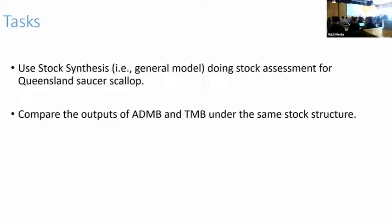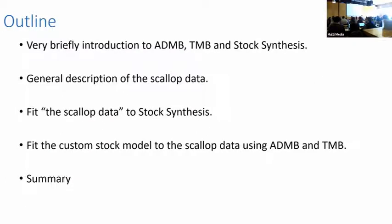This model is a spatial model, also trying to include some environmental factors — specifically sea surface temperature. We found that sea surface temperature has a negative impact on stock catch rate. The outline here is: I'll briefly introduce AD&B, TMB, and Stock Synthesis based on what I know. Then I'll describe the model, fit data to Stock Synthesis, and also fit the custom stock model.